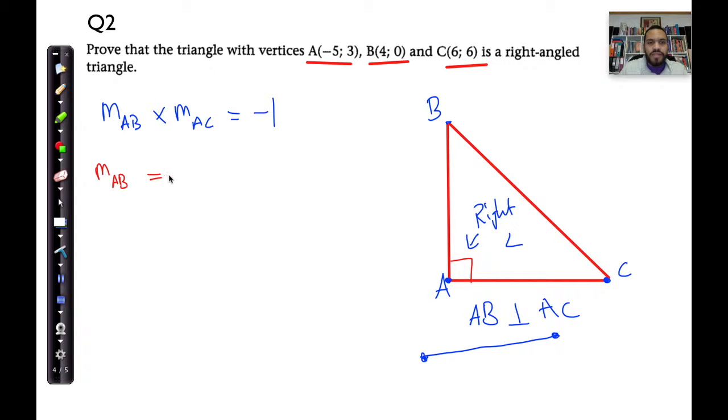MAB is equal to the following. Let's make this X1, Y1, X2, Y2. So I'm going to say 0 minus 3, which is my Ys, and then I'm going to say 4 minus (-5). And that gives me the following: -3 divided by 4 plus 5, which is 9, and that's going to give me -1/3.